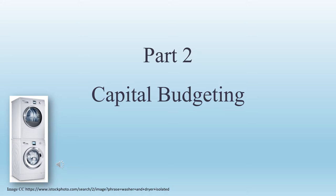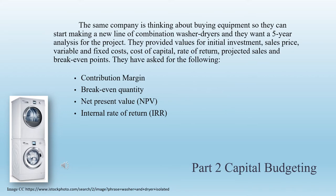Part 2: Capital Budgeting. The same company is thinking about buying equipment to start making a new line of combination washer-dryers, and they want a five-year analysis. They provided values for initial investment, sales price, variable and fixed costs, cost of capital, rate of return, projected sales, and break-even points. They've asked for: contribution margin, break-even quantity, net present value, and internal rate of return.